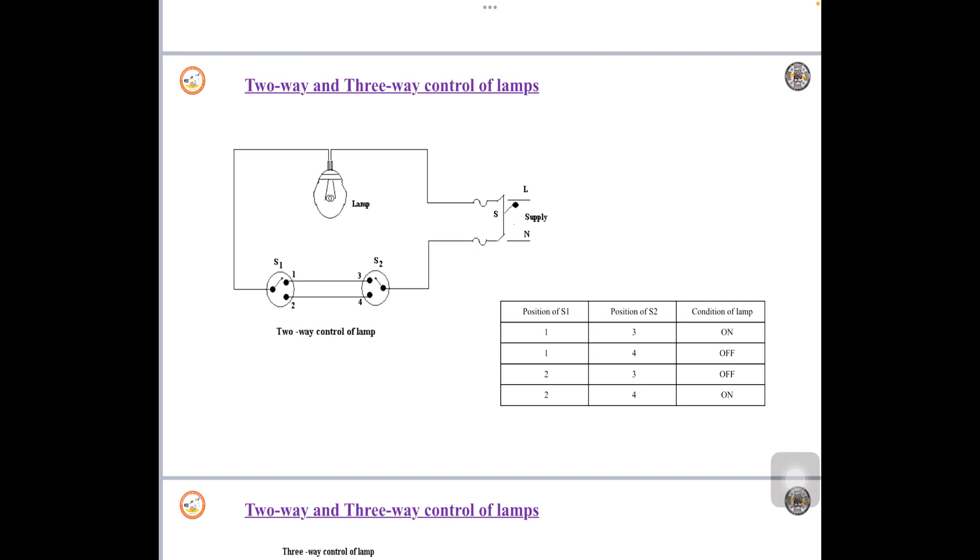Next condition, position of S1 we are changing now from 1 to 2, and position of S2 is 3. Similarly, S1 is at 2, S2 is at 3, but there is no interconnection between 2 and 3. When there is no interconnection, it is a break circuit, so condition of the lamp is off.